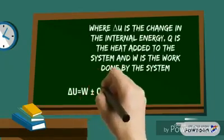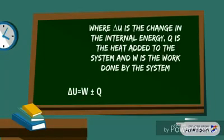Where delta U is the change in the internal energy, Q is the heat added to the system, and W is the work done by the system.